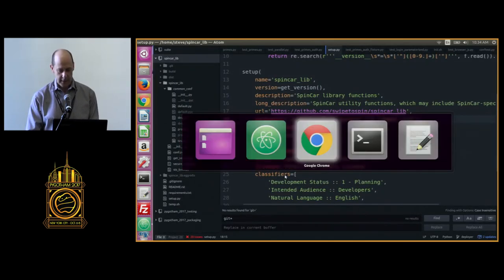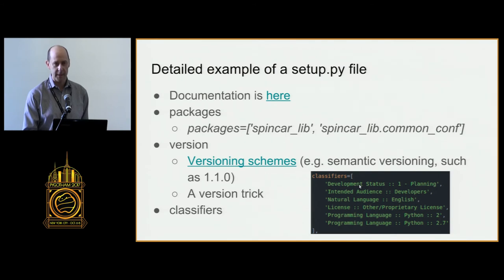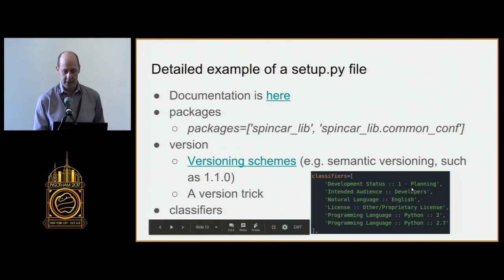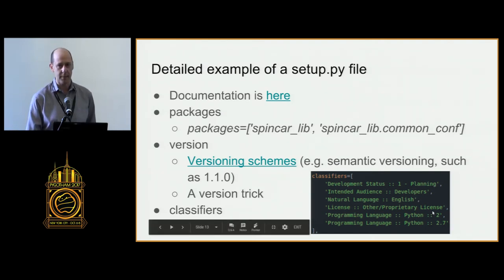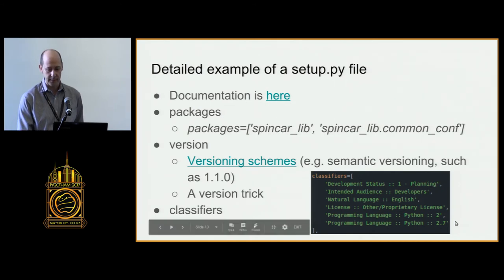The last section is classifiers — metadata about your project to help people searching for it. Development status can range from planning through production, warning users if the package isn't fully baked. Intended audience — this one's for developers. License and programming language: since my package works with Python 2, I communicate that in classifiers by listing Python :: 2 and Python :: 2.7. I built a pure Python wheel targeting Python 2, so this is consistent with that.